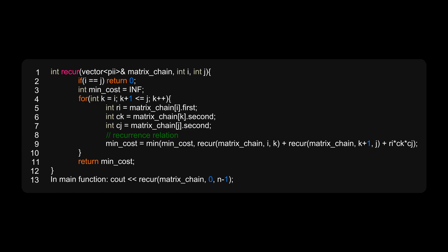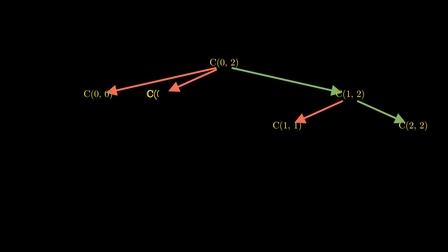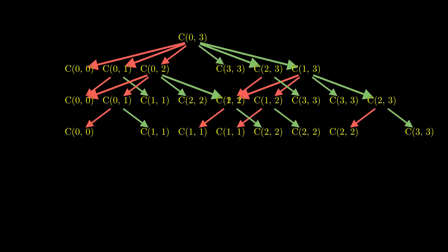If you draw the recursion tree for the function calls, you find many repeated calls — for example, call (0,0) is repeated twice, (1,1) twice, (2,2) twice, even for a chain of size three. For a larger matrix chain there are even more repeated sub-problems. So let's look at an iterative, bottom-up version of the DP solution.